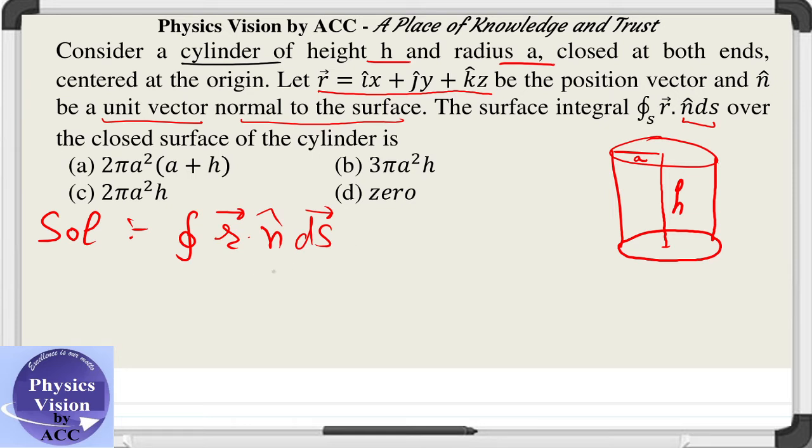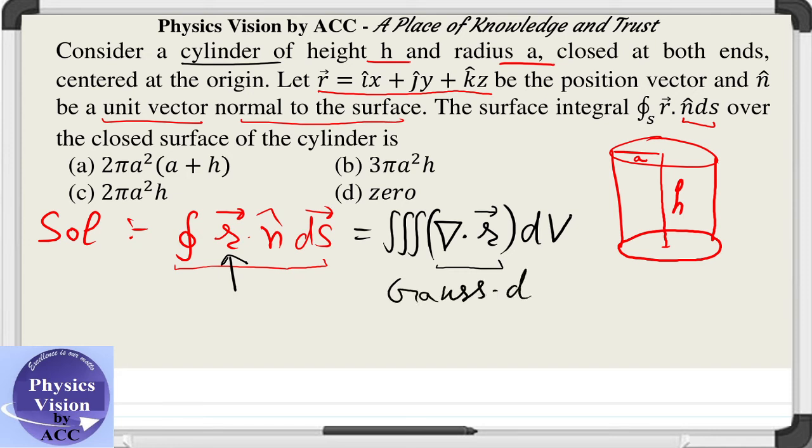As this is given to be a closed surface, we will make use of Gauss divergence theorem, which says that the closed surface integral of a vector field is equal to the volume integral of the divergence of that field. This is Gauss divergence theorem.